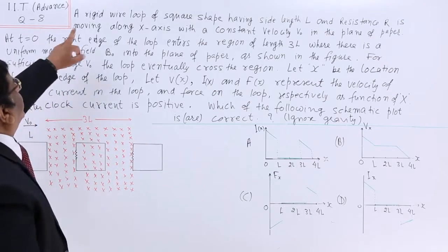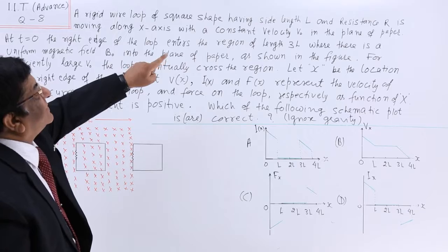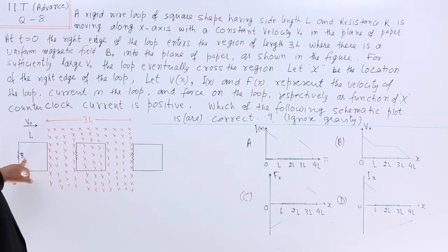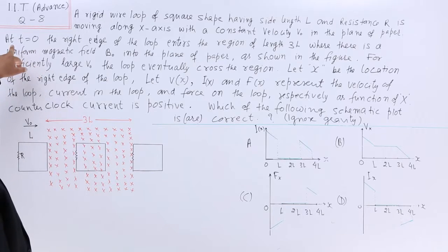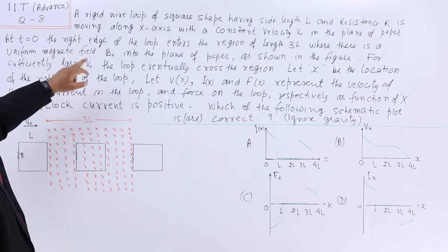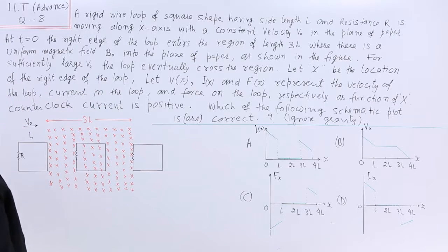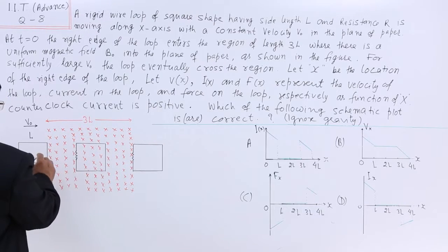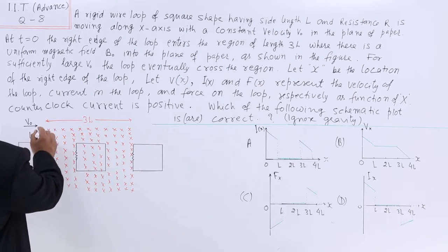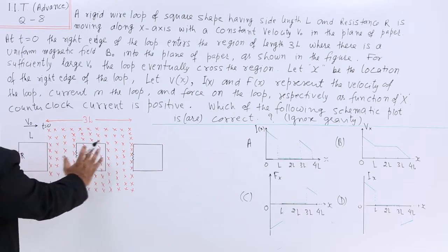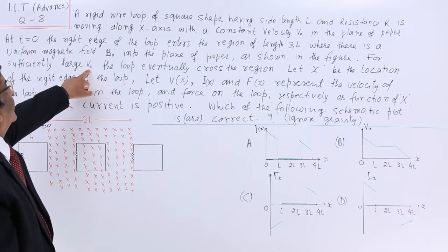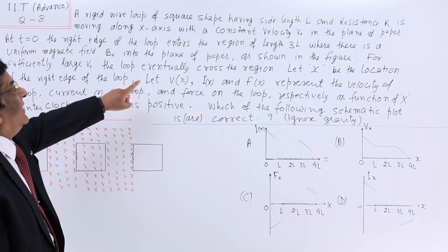See this question. It says a rigid wire loop of square shape having side length L and resistance R — this is the resistance for the complete loop, we are just indicating it at one point. At T equals 0, the right edge of the loop enters a magnetic field region of length 3L. For sufficiently large initial velocity V0, the loop eventually crosses the region.